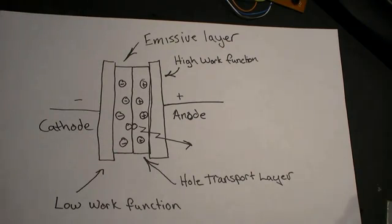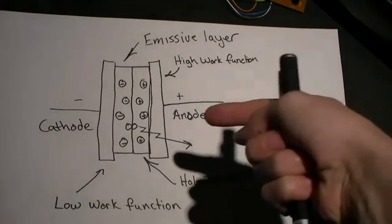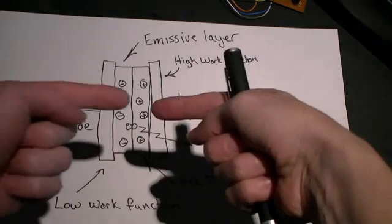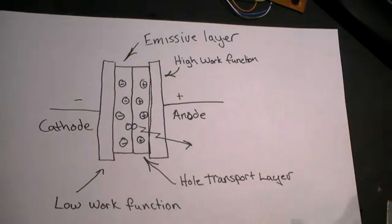Organic LEDs have similar structures, however, they're made of polymers that are carbon-based. They have cathodes and anodes injecting electrons and holes, and band gap materials that emit photons.